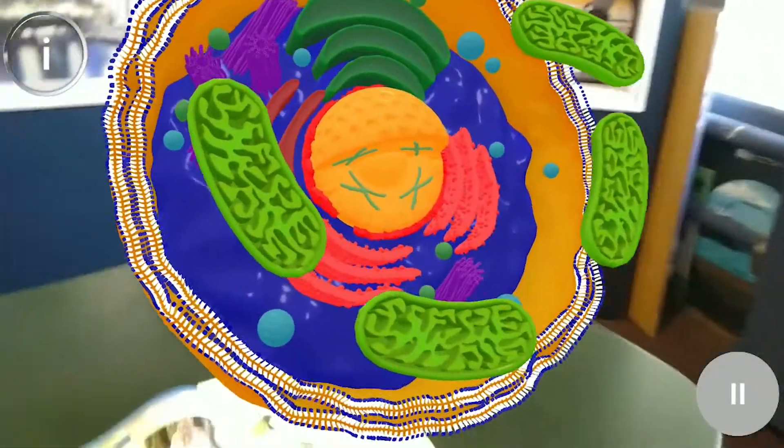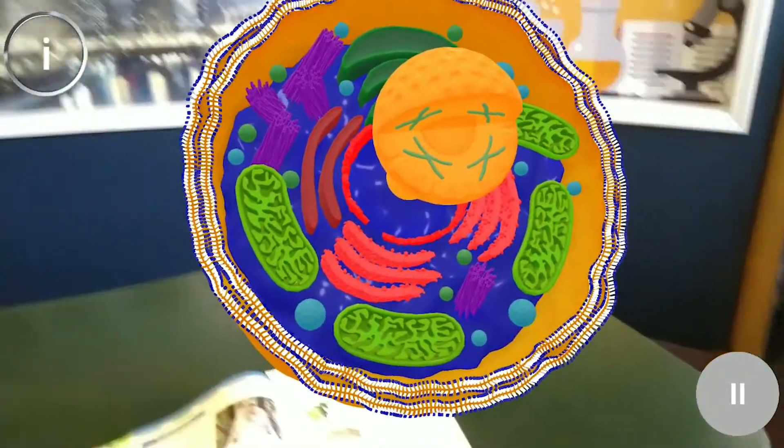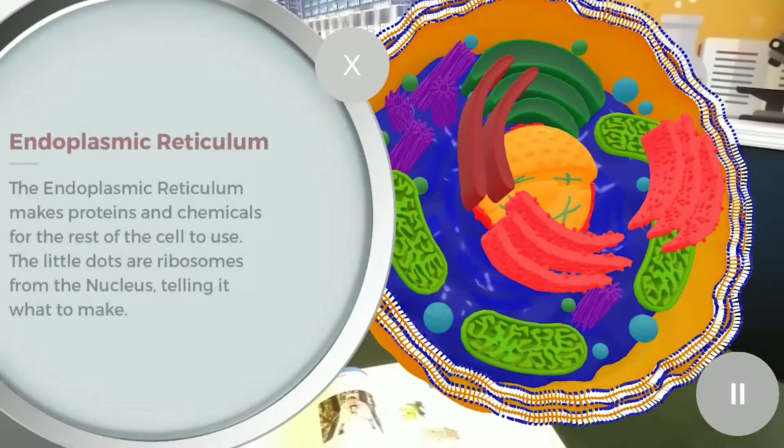The mitochondria are like the power plants of a cell, producing all of the energy that the rest of the cell needs. The nucleus is like town hall. It's where all of the cell's blueprints and orders are stored. The endoplasmic reticulum is like a factory.